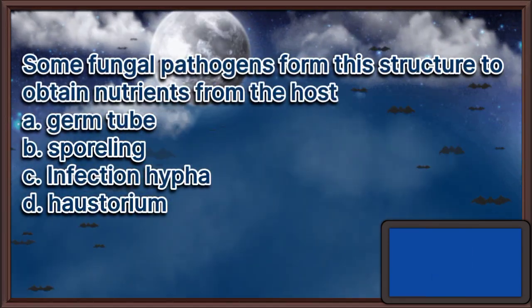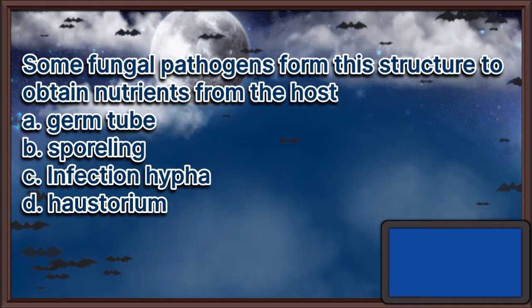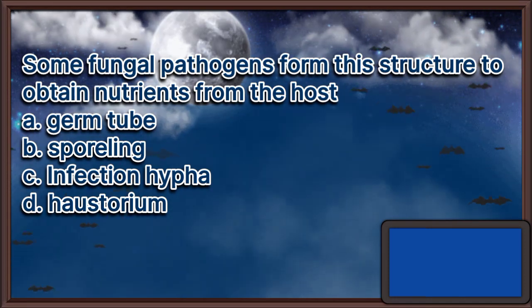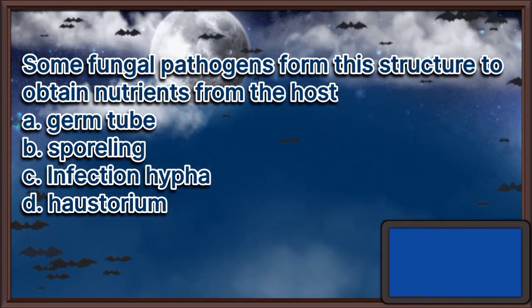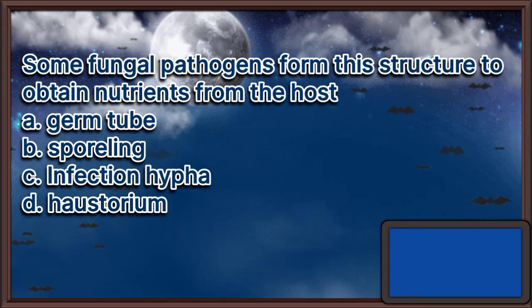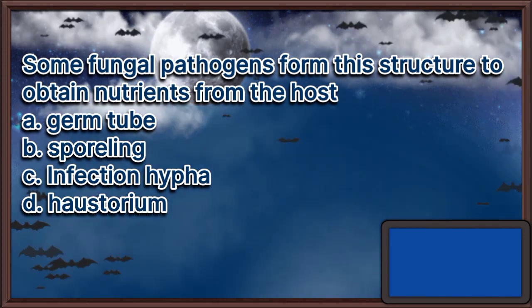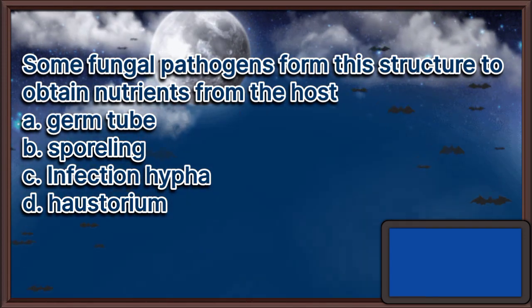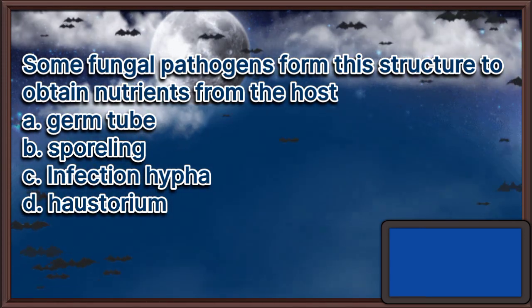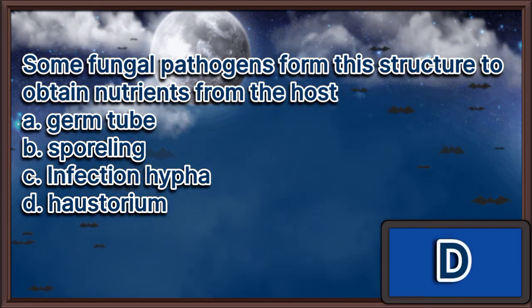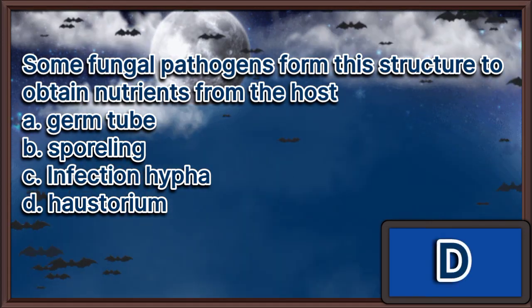Some fungal pathogens form this structure to obtain nutrients from the host. A. Germ tube. B. Sporoling. C. Infection hypha. D. Haustorium. The answer is letter D.